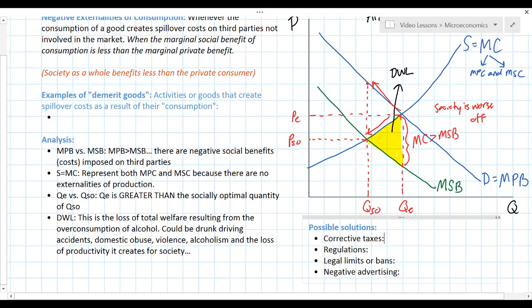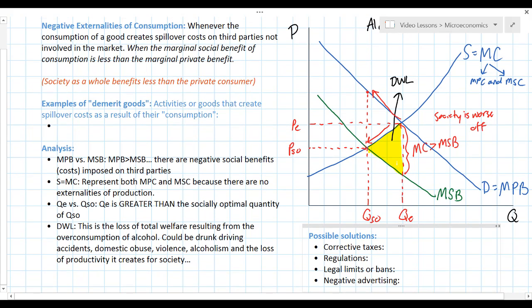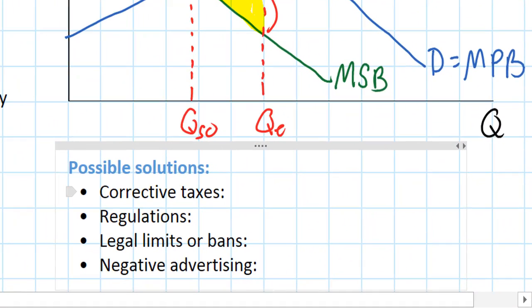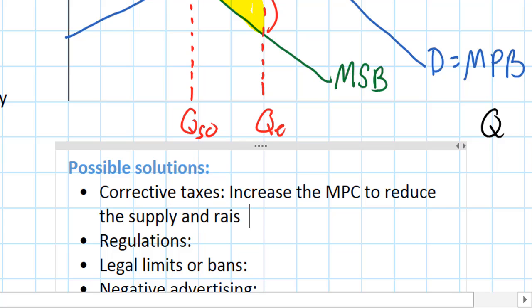The first thing I want to talk about is the most obvious and perhaps the most commonly proposed solution to negative externalities of consumption, and that is corrective taxes. A corrective tax is meant to increase the marginal private cost, or simply the marginal cost in this case, to reduce the supply and raise the price.